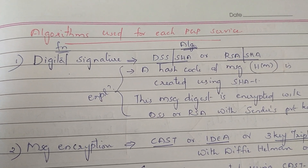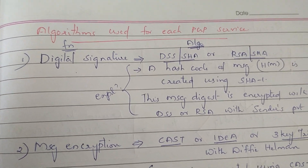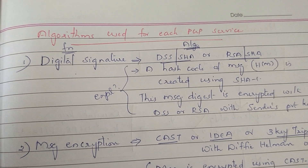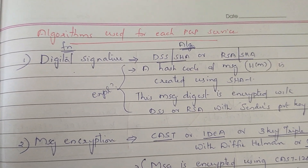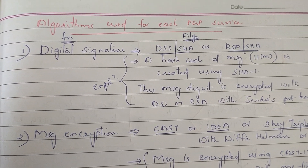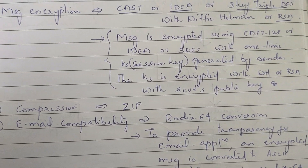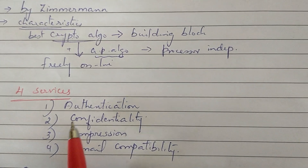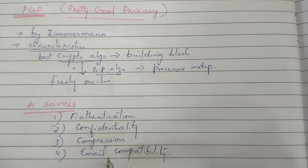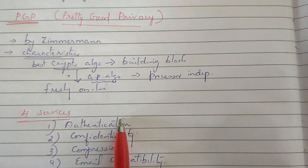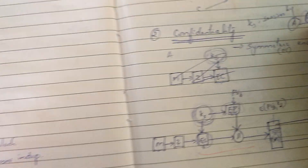The first topic of cryptography is PGP, Pretty Good Privacy. This is the topic of email security. PGP provides four services: authentication via digital signature, confidentiality via message encryption, compression, and email compatibility.